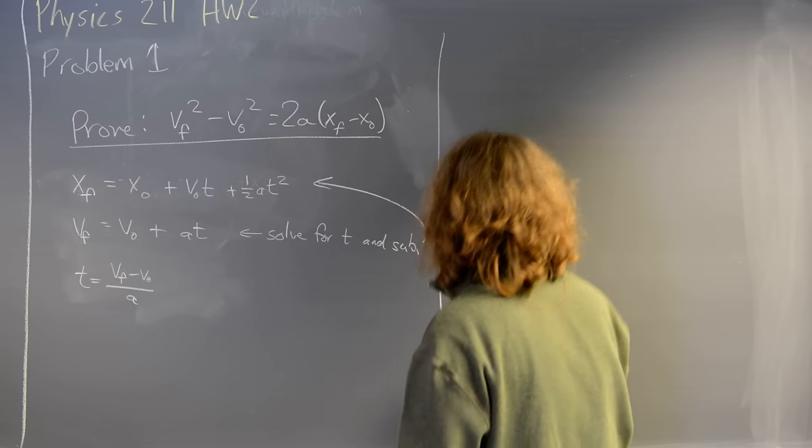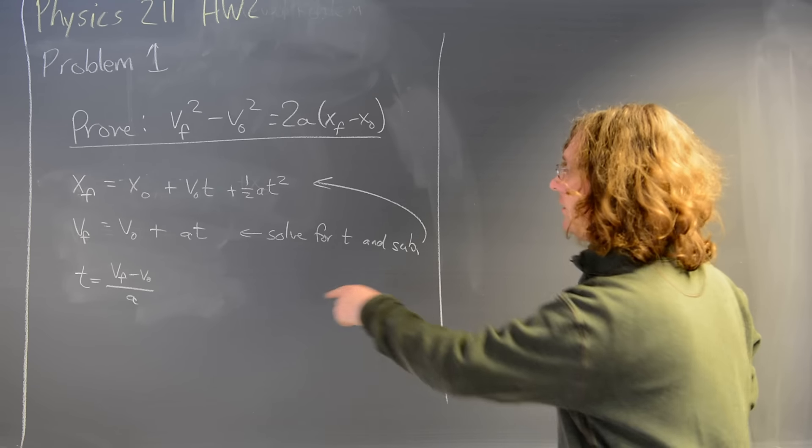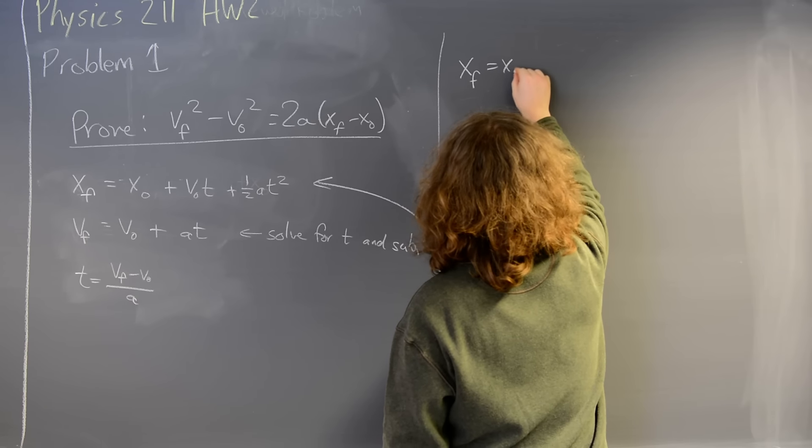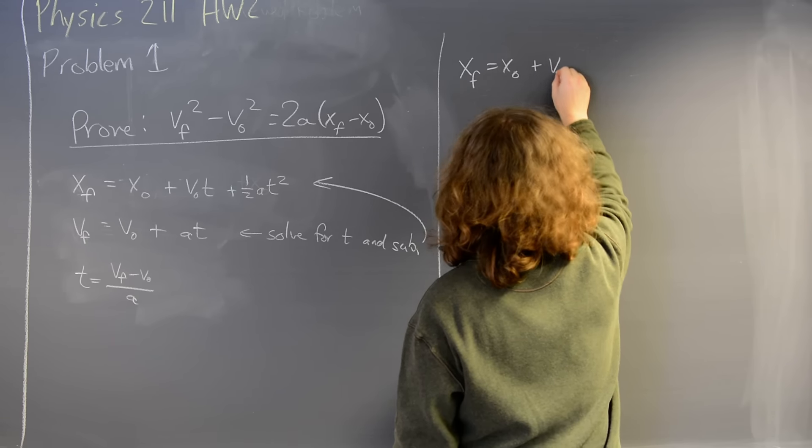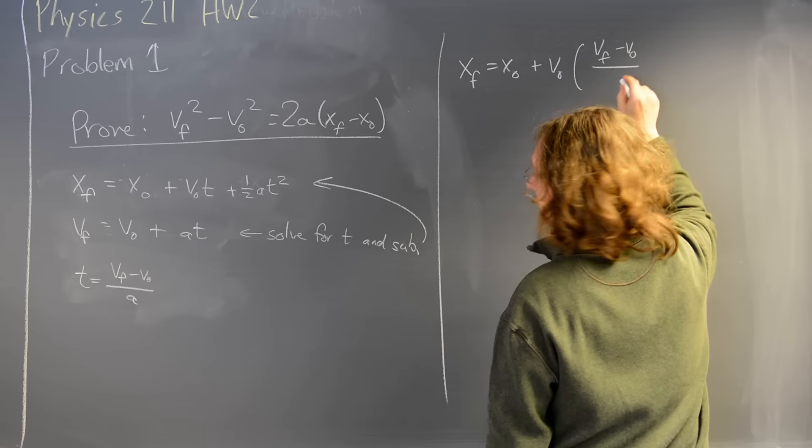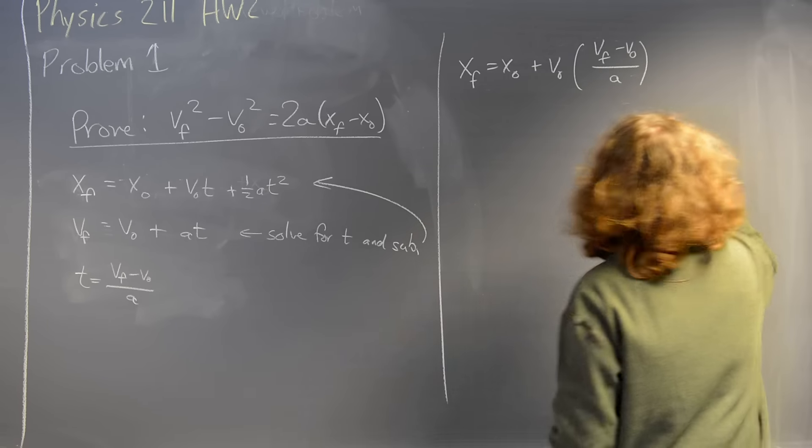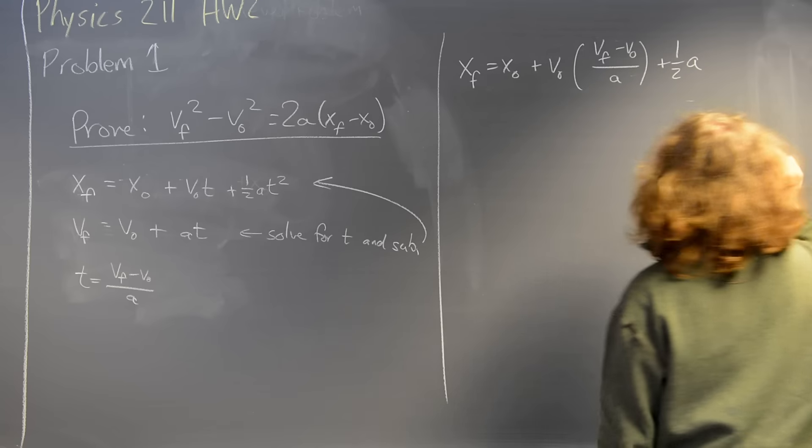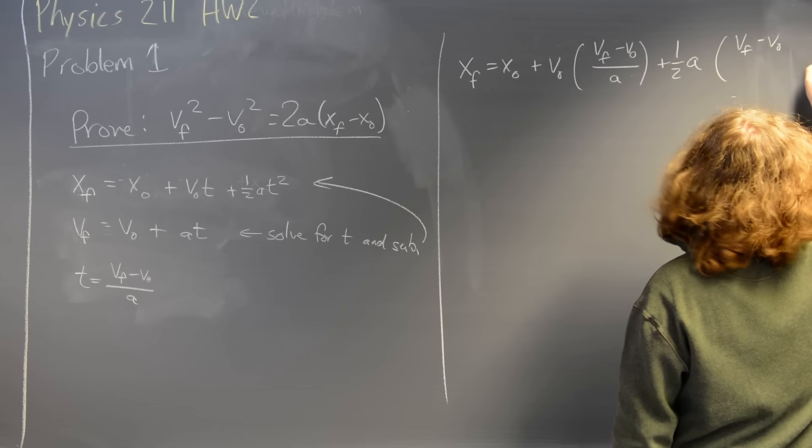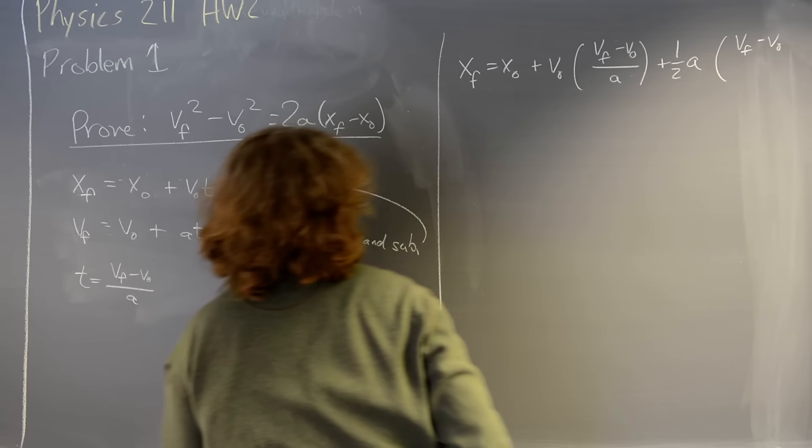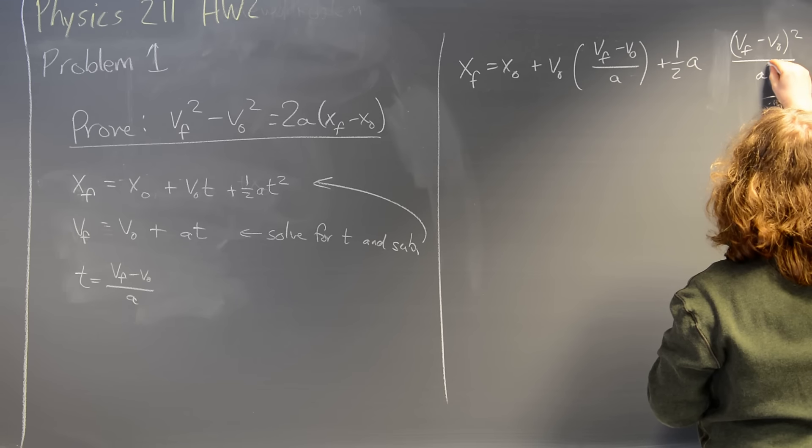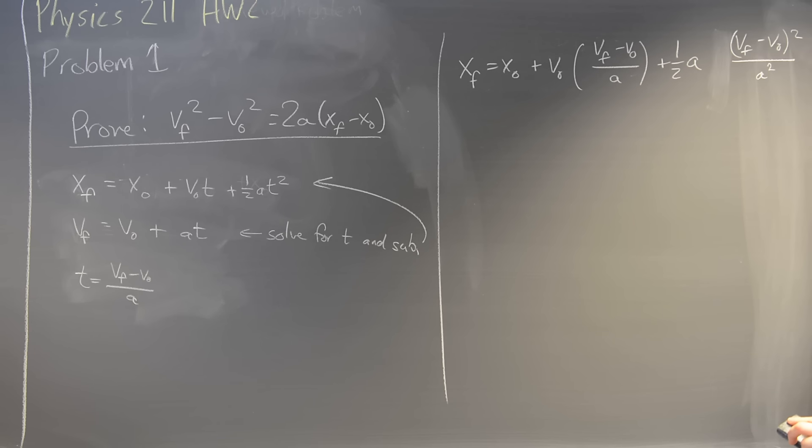So now I take this and I'm going to substitute up above. Let me come over here to do that substitution. So I'm going to plug that t in where it goes. This gives me xf equals x0 plus v0 times vf minus v0 all over a, and then this term plus one half a times that stuff squared times vf minus v0. But I'm going to write this as a fraction